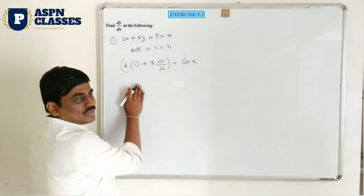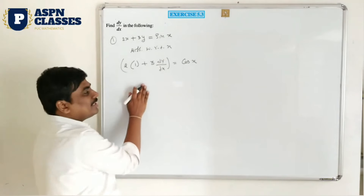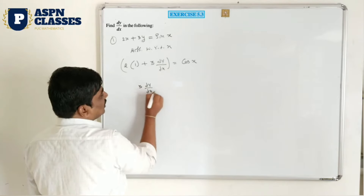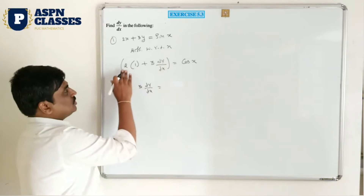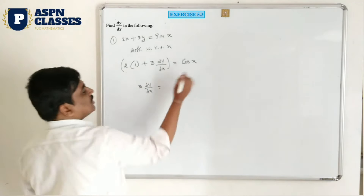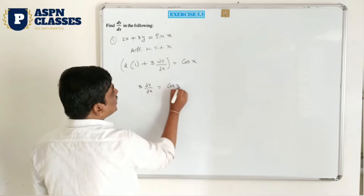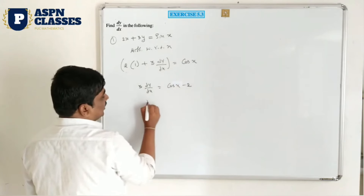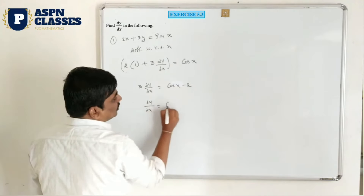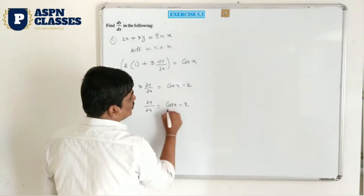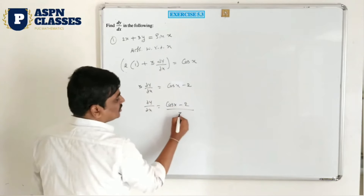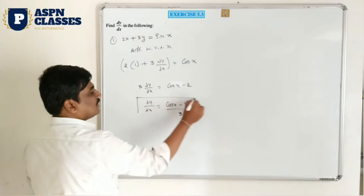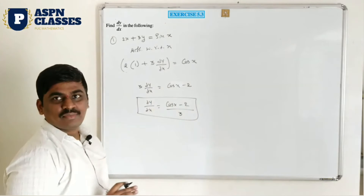Next step: dy/dx — only 3 dy/dx is remaining on the left side. 2 into 1 is 2, so 2 has to shift to this side. Cos x is already there, plus 2 shifted to this side means minus 2. So dy/dx equals cos x minus 2 divided by 3. This is your answer.